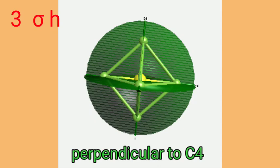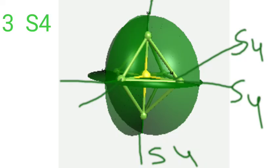There are 3 sigma H planes which are perpendicular to the C4 axis, passing through the opposite vertices. There are a total of 3 sigma H planes.